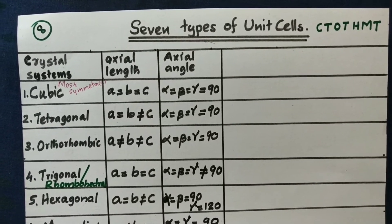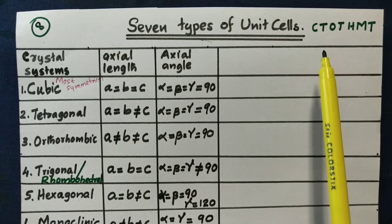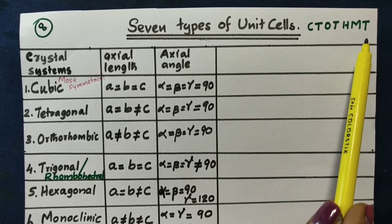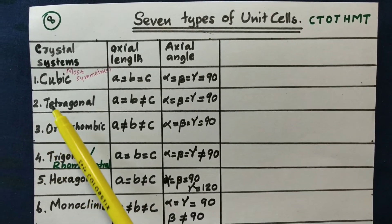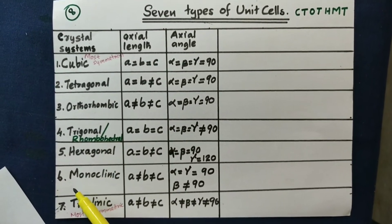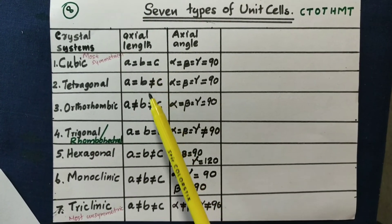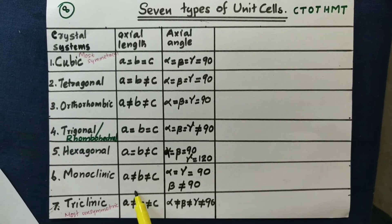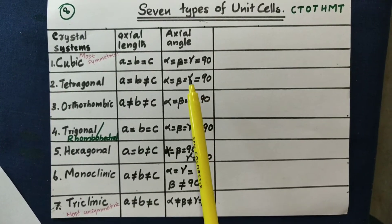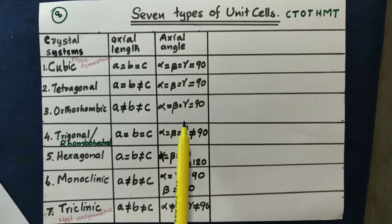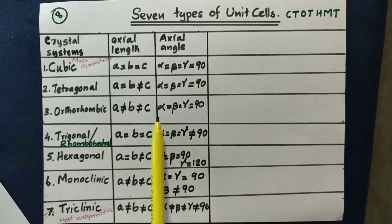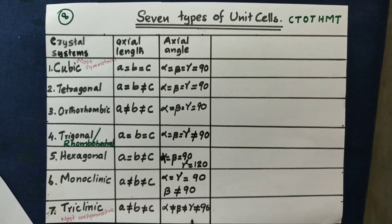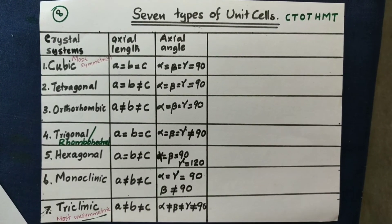Now, if you are learning this, you will recall C T, O T, H M T. You will learn the names, then I will show the length of the axis. The axial angles are equal for each system. This is the most unsymmetrical system — triclinic.